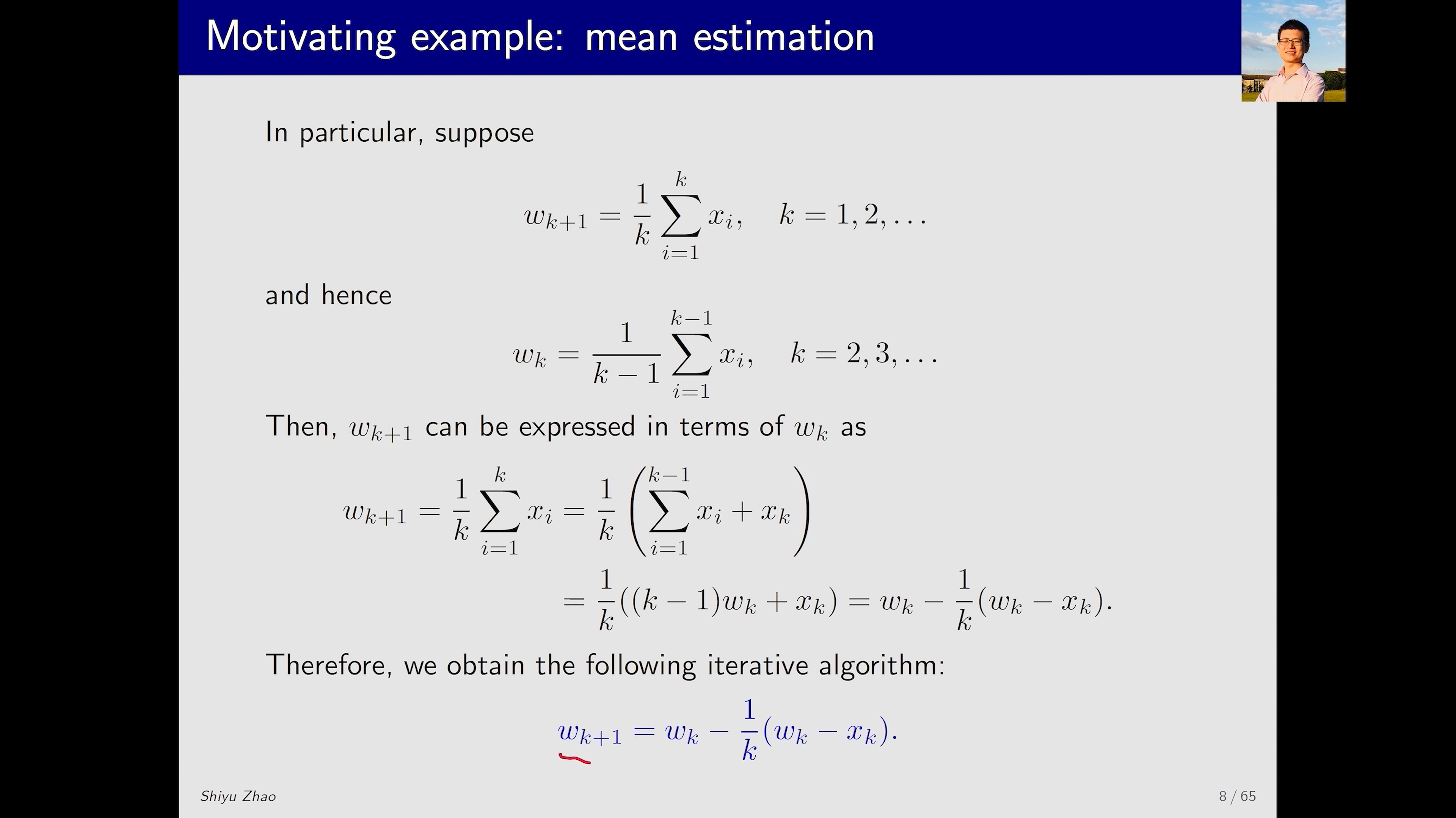Let's take a closer look at it. The left side is w_{k+1}, which equals w_k minus 1 over k times (w_k - x_k). This gives us an iterative algorithm.